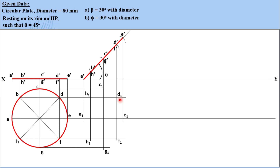Join all points in sequence. Remember: never join only two points; join maximum points as much as possible. The trick is to complete a quarter of the circle at one time, as it will appear as an ellipse. Join three points, then the next three, then the next three, completing the curve. This ensures there are no corners in your top view.